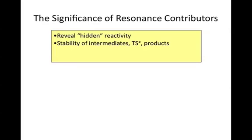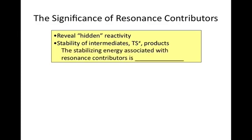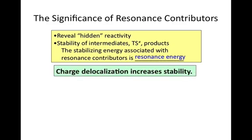Earlier we talked about stability trends and it was always about spreading out the electrons. For example, a larger atom can better hold a negative charge because you can spread out that surplus of electrons over a larger surface area. So the more we can spread out our electrons, the more stable our product is going to be. The stabilizing energy that we have with our resonance contributors is known as resonance energy. So the more we can delocalize, the more stable our compound is going to be.